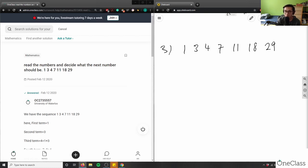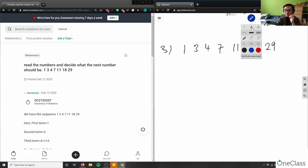So let's take a moment and think about this problem. I have 1, 3, 4, 7, 11, 18, and 29. Let me see if I can find some patterns here.